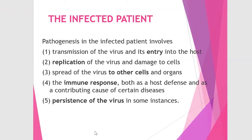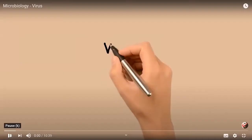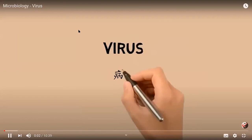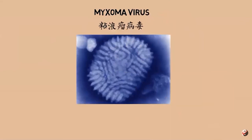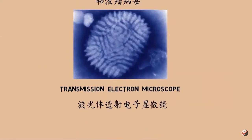A virus is a tiny infectious agent that reproduces inside the cells of living hosts. When infected, the host cell is forced to rapidly produce thousands of identical copies of the original virus. Unlike most living things, viruses do not have cells that divide — new viruses assemble in the infected host cell.